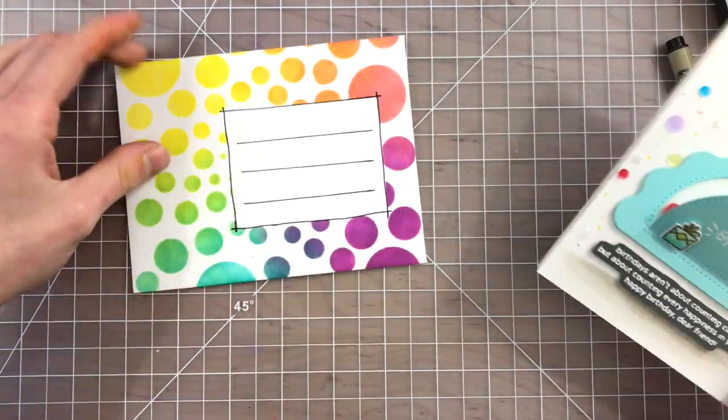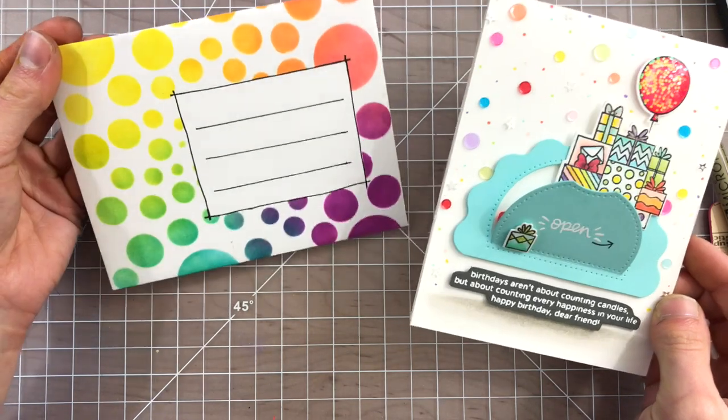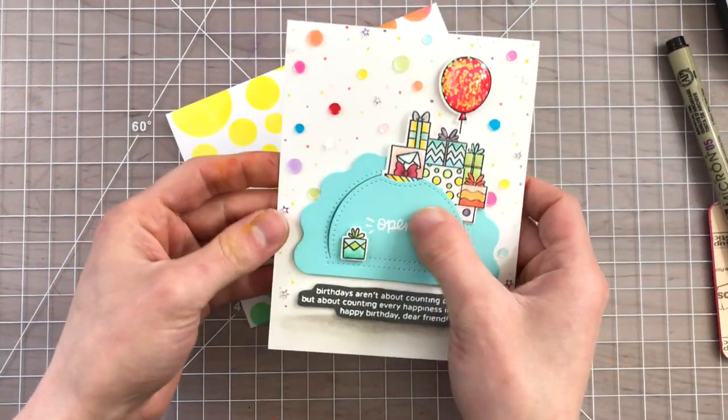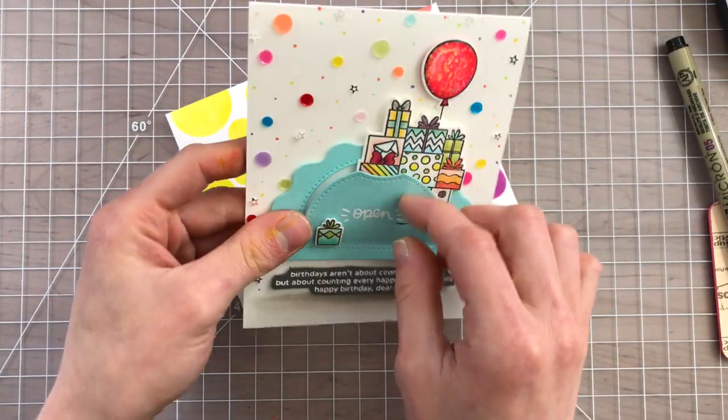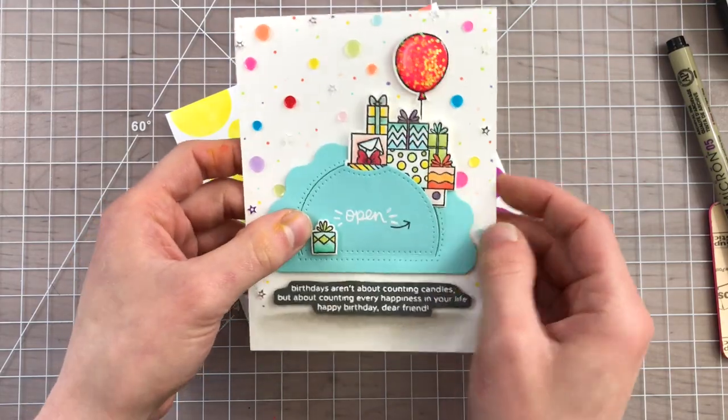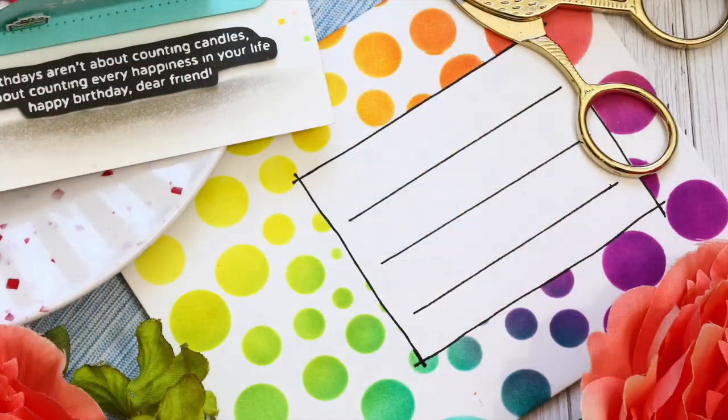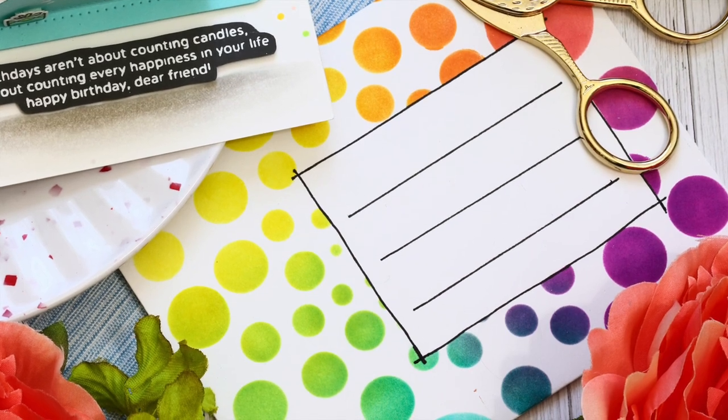Now this is going to finish off the card. You can see that we have our cute little envelope and I didn't catch it on camera but I do have my greeting that I had put on the inside in there as well. That's going to finish off this card. I love all the bright and happy colors and I hope you do too.